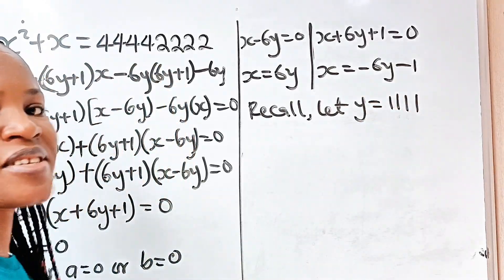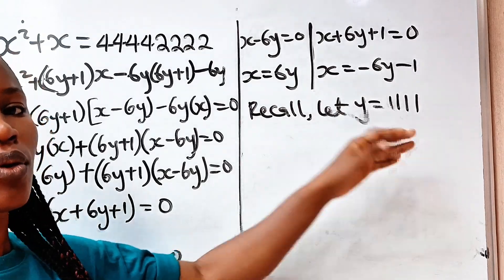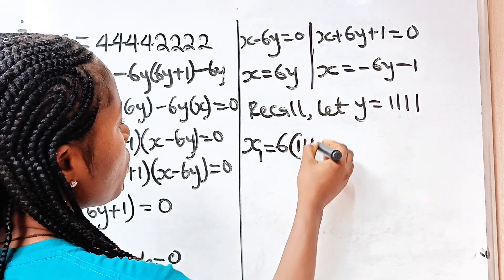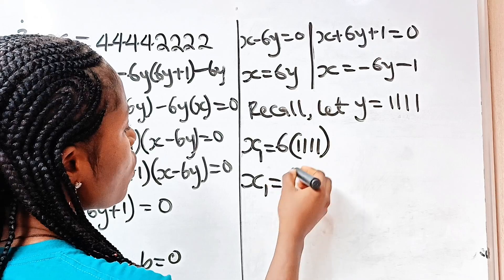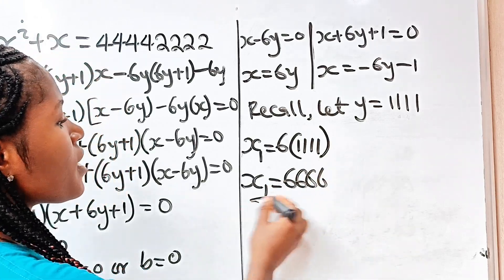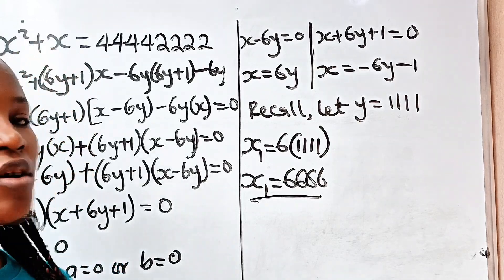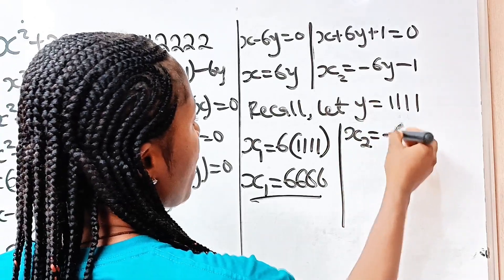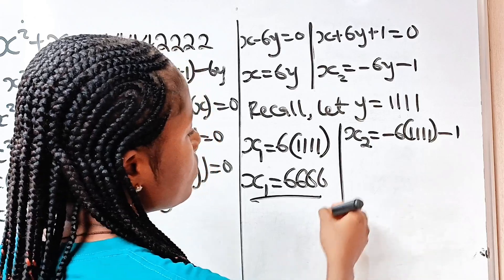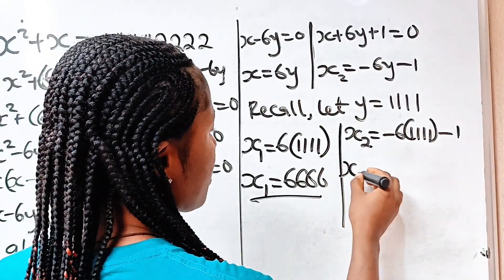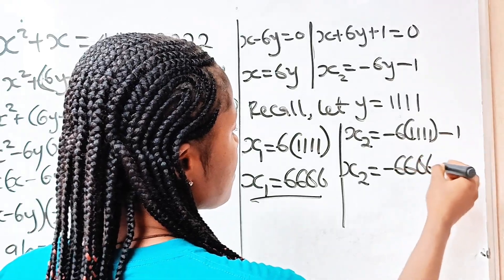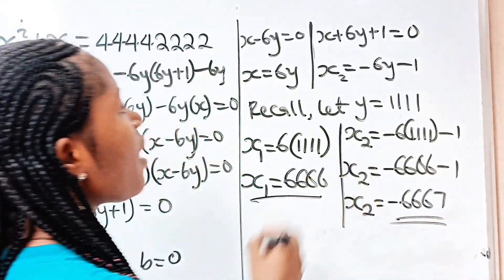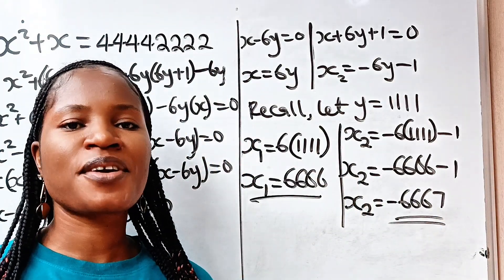Recall that y equals 1111. So the first value is x equals 6 multiplied by 1111, which gives x equals 6666. For the second value: x equals minus 6 multiplied by 1111 minus 1, which gives x equals minus 6666 minus 1, so x equals minus 6667. Thank you so much for watching and see you in the next video!